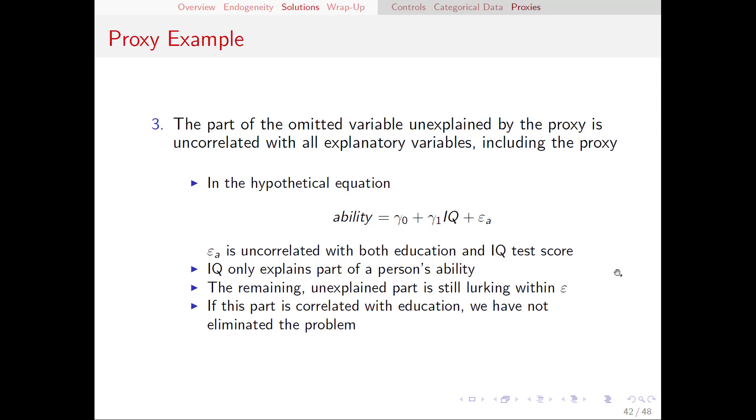Breaking this down with our example, we have that hypothetical relationship between ability and IQ. Remember that epsilon a in this equation is all of the parts of ability that are not explained by IQ. This is where it's really important to remember that IQ and ability are not the same. And when we put IQ into our regression, we are only controlling for part of ability, the part of ability that can be explained by IQ. But of course, there's plenty of other parts of ability that are still out there.